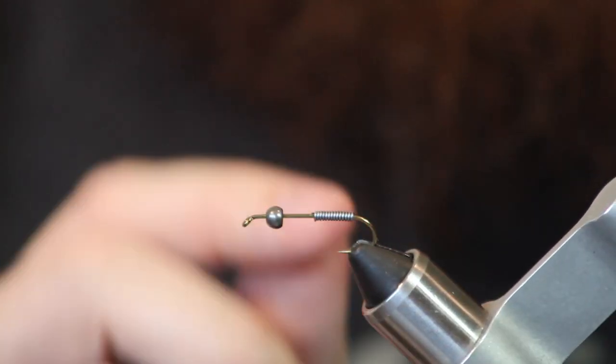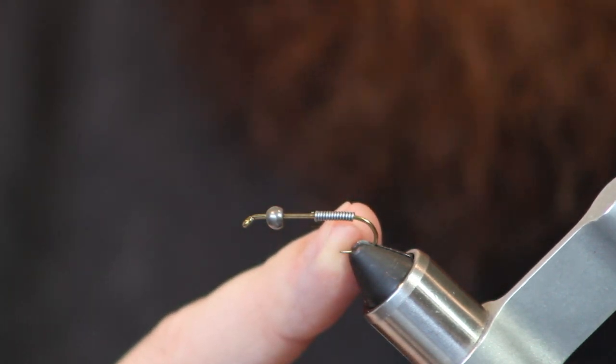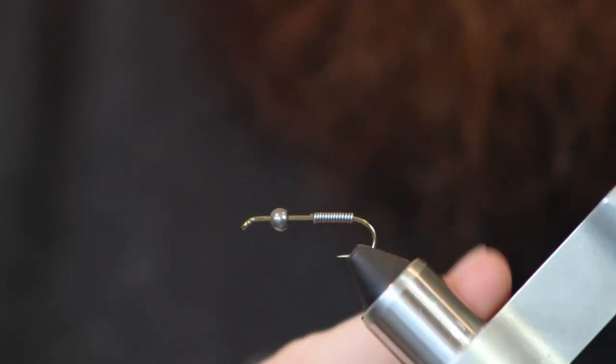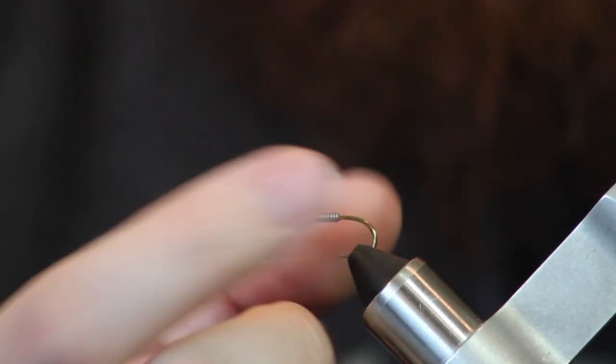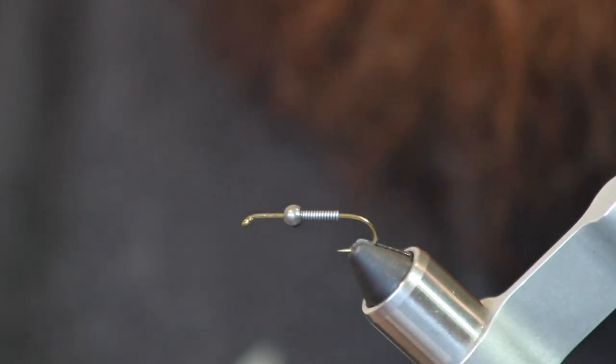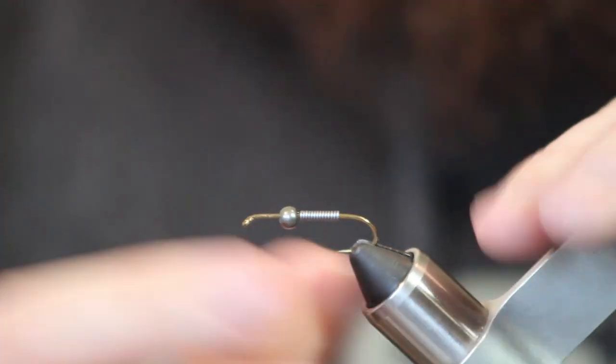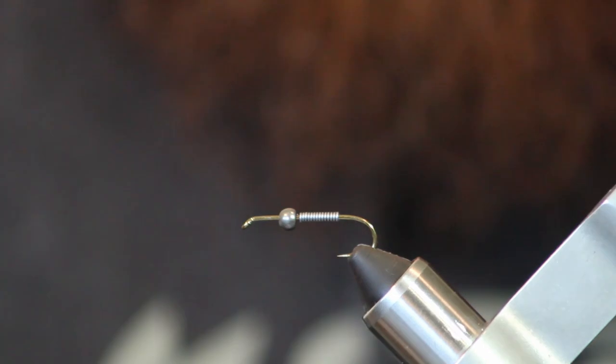To save us a little time today, I took a hook and went ahead and put a bead on it and wrapped some lead on it. I've got about 10 to 12 wraps of lead wire. You can pre-do these like this. That lead will slide up and down. That bead will slide up and down. If you're doing a big batch of these, it'll make your life a lot easier.